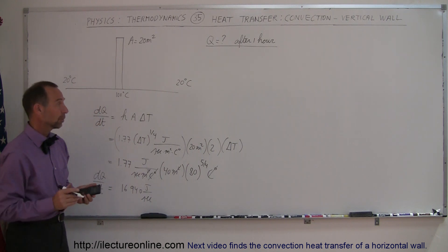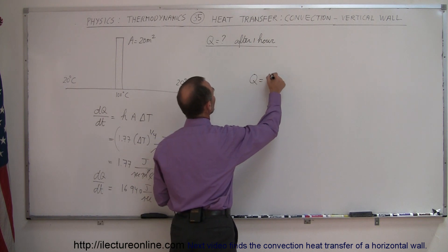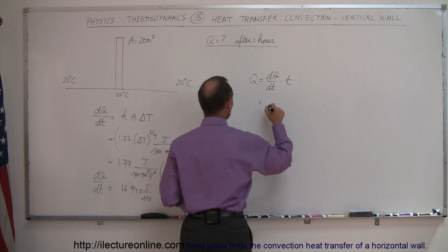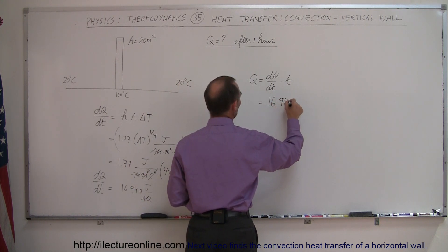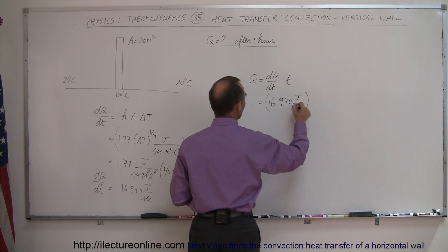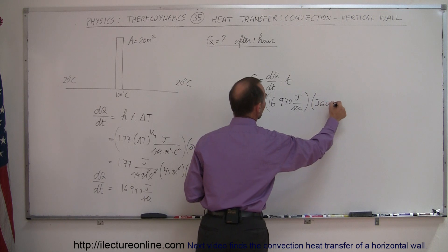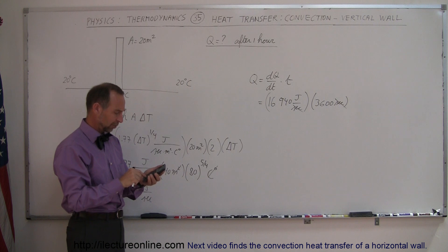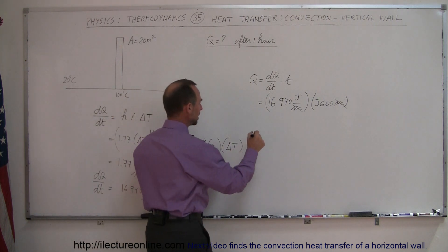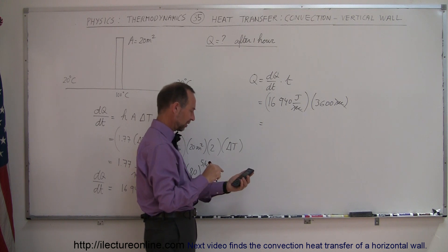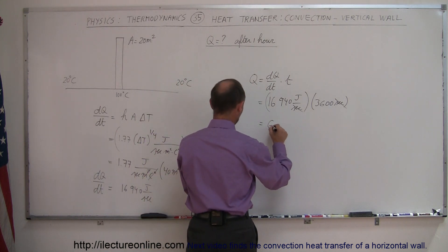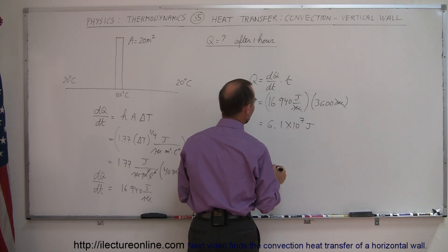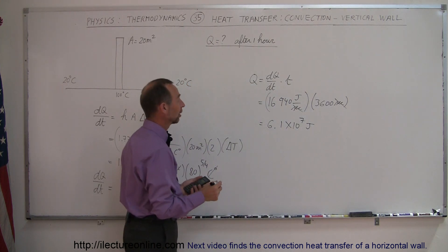Now we need to find Q after one hour, so Q equals dQ/dt times the time elapsed. We have dQ/dt = 16,940 joules per second, and we multiply by 3,600 seconds because that's how many seconds are in an hour — the seconds cancel out. Multiplying gives 6.1 times 10 to the 7th joules, that's 61 million joules being lost by that wall.